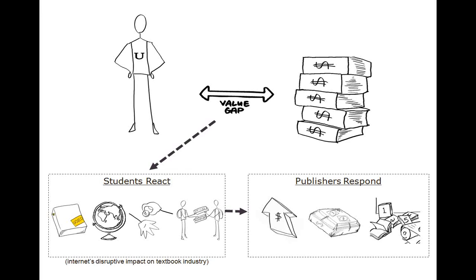And what happens then? Publishers respond defensively by raising prices — when I started in college publishing, we raised prices at about 4%; last year there were double-digit price increases on textbooks. Publishers also use bundles to change ISBNs, helping increase new book sales and decrease used book infiltration back into the market. And then new editions come out quicker than ever — they used to come out every three and a half to four years; now they come out every 18 to 24 months in order to minimize used books and increase profits.